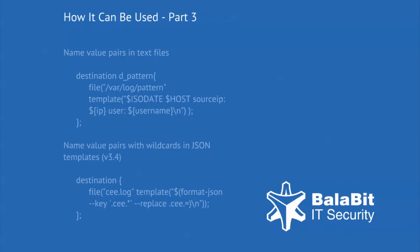On this slide, there are two examples of how to use name-value pairs parsed out from log messages. The first example shows a custom template which only writes the extracted IP address and username into a log file. The second example requires at least syslogng 3.4, as it uses the JSON template function. It selects all name-value pairs starting with .cee, but removes this prefix from the resulting JSON string.